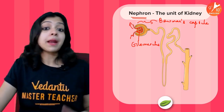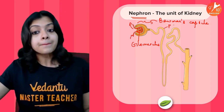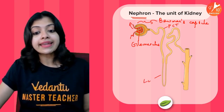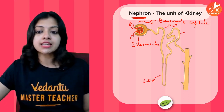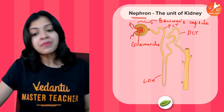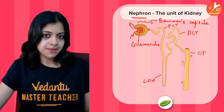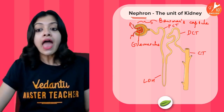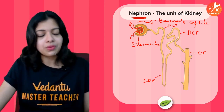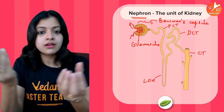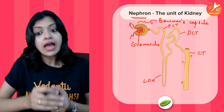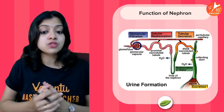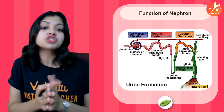Then come the tubular parts of the nephron: the proximal convoluted tubule (PCT), then the hairpin-like structure called the loop of Henle, and the distal convoluted tubule (DCT). This is followed by a collecting duct. Many nephrons join into a common collecting duct, and many collecting ducts together empty the urine formed in the nephrons to the deeper areas of the kidney.